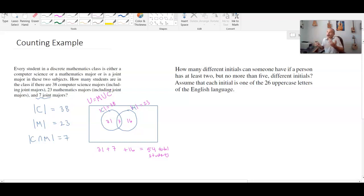Because of that, what I really am asking is what is the size of the universe, which is equivalent to asking what is the size of the union of these two sets. Well that's going to be 54.